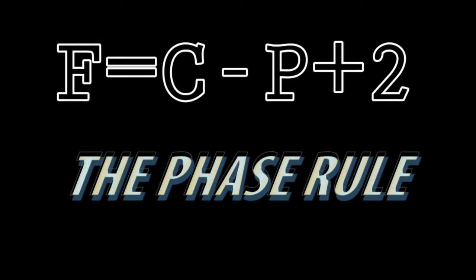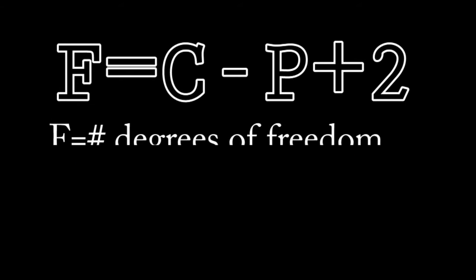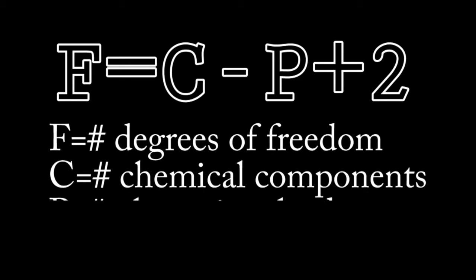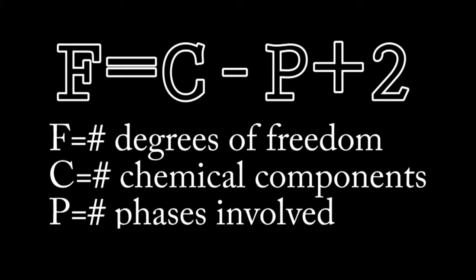Welcome to the phase rule! One of the most important concepts in all of metamorphic petrology. The formula, F equals C minus P plus 2, is shorthand for saying that the number of degrees of freedom in a chemical system is equal to the number of chemical components involved minus the number of phases plus 2.